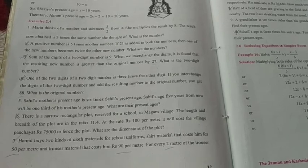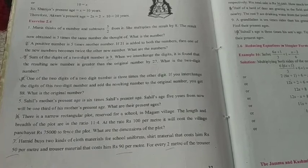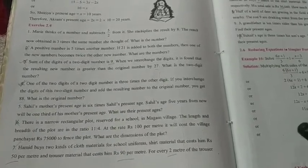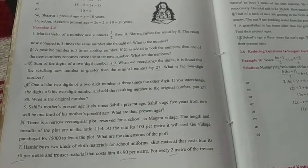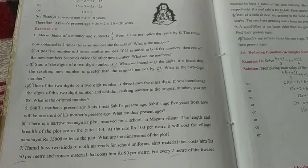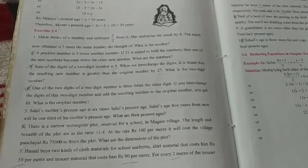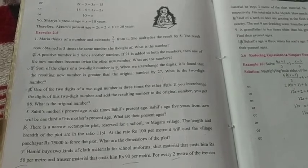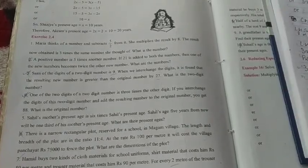Assalamu alaikum wa rahmatullahi wa barakatuhu dear students, welcome back to another lecture. So we were done with three exercises, now the fourth is on page number 32 and question number one is: Maria thinks of a number and subtracts five by two from it. She multiplies the result by eight. The result now obtained is three times the same number she thought of. What is the number? So students, if you could see, it's being said that she is thinking of a number.